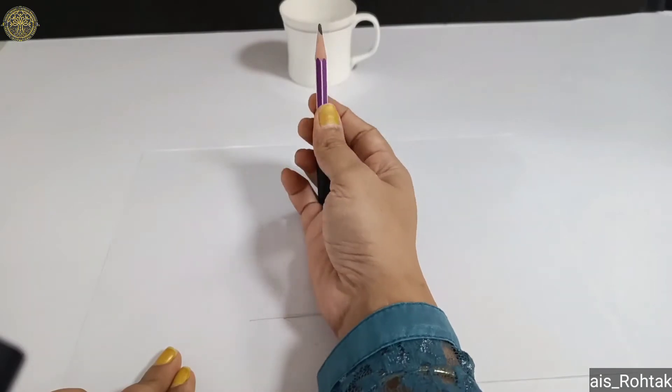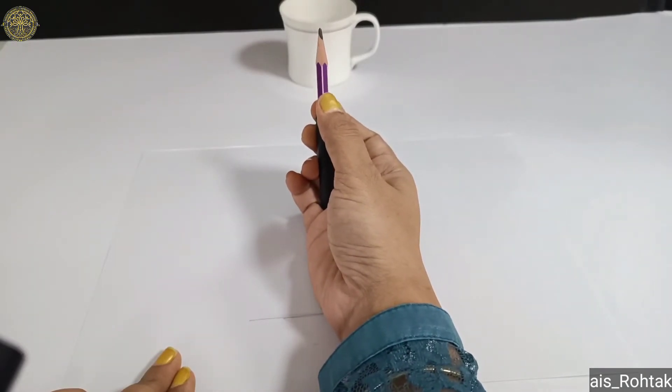Hello kids, today we are going to draw a still life drawing. Today's object is a cup. First, we have to take a sheet, draw a baseline on it, and measure our cup height with the help of a pencil like this. Our hand should be straight, and then we have to mark it from the baseline.